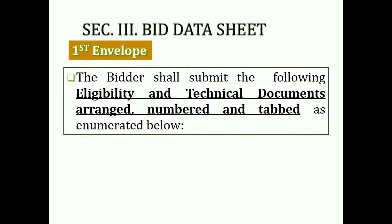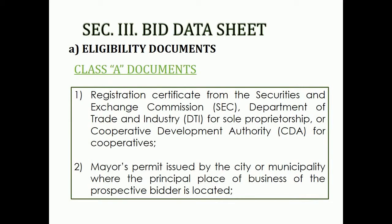Section 3. Bid Data Sheet. First Envelope. The bidder shall submit the following eligibility and technical documents arranged, numbered, and tabbed as enumerated below. Section 3. Bid Data Sheet. A. Eligibility Documents.